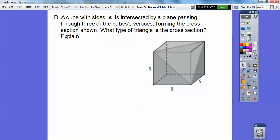A cube with side S. Here's my cube, like a Rubik's Cube, side S. It's intersected by a plane. Here's a plane slicing through here. What's this cross-section? Passing through the vertices of the cube's vertices, forming the cross-section. So what type of triangle? I can see it's a triangle. What type of triangle is it? Look at this right here.